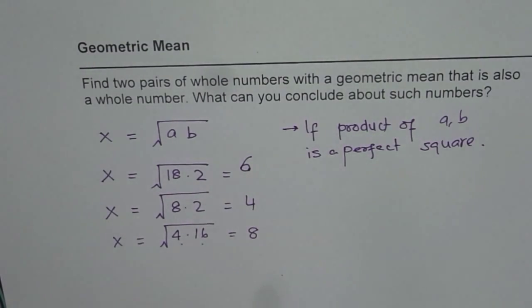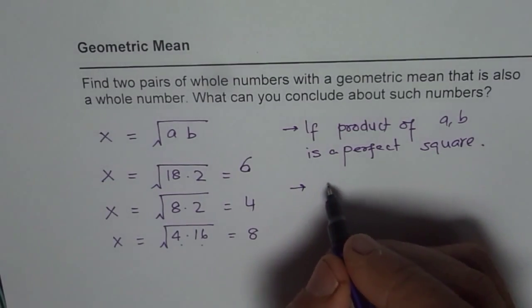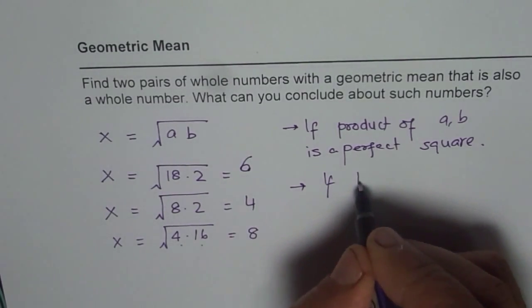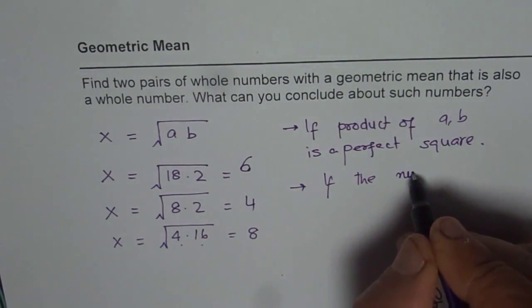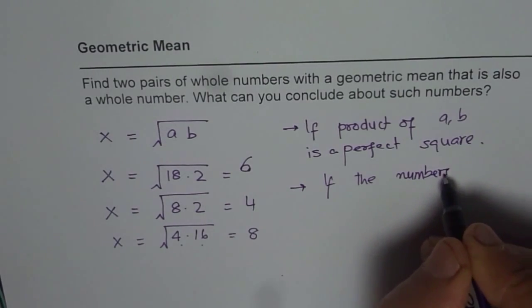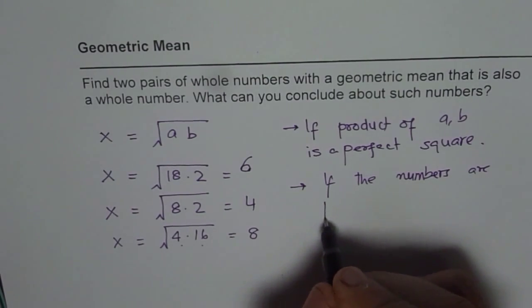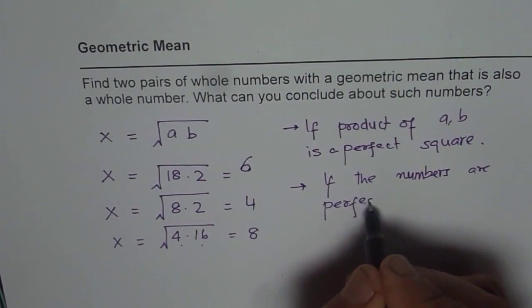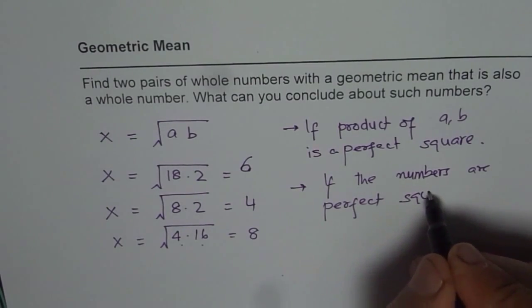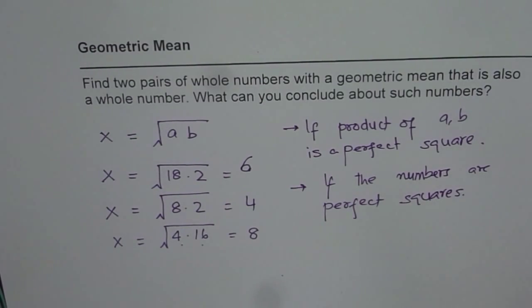And what we also notice here is the two numbers themselves are perfect squares. So if the numbers are perfect squares, then also geometric mean will be a whole number. So that could be the criteria.